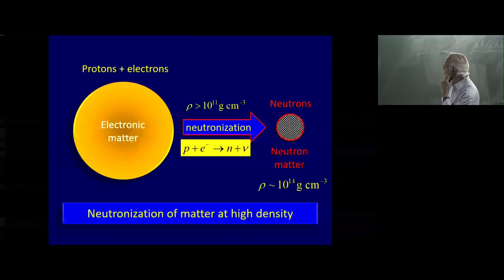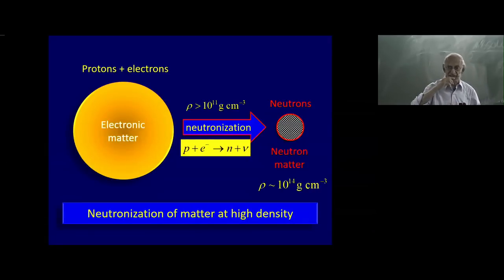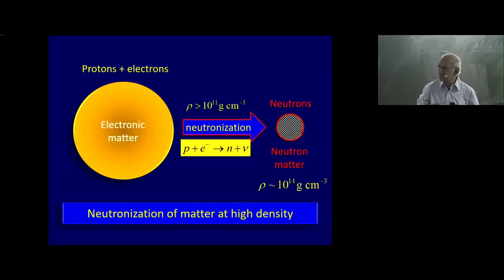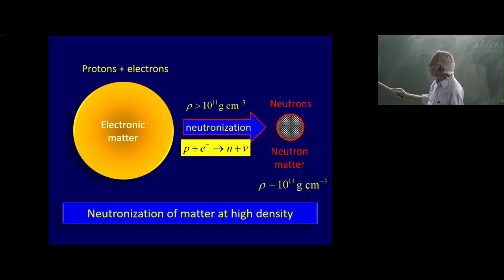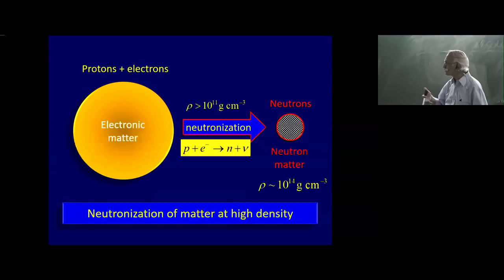Pictorially, what we said was: electronic matter, as Landau called it — a star made up of protons and electrons — for some reason collapses. The reason was provided by Chandrasekhar: if the mass is greater than 1.4 solar masses, electron pressure cannot support it against gravity, so it collapses. In the process, protons combine with electrons to form neutrons, and what you finally get is a small sphere made up of neutrons. It reaches equilibrium at a density of roughly 10 to the power 14 grams per cubic centimeter, which is the density of terrestrial atomic nuclei.